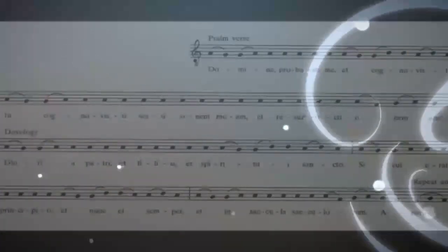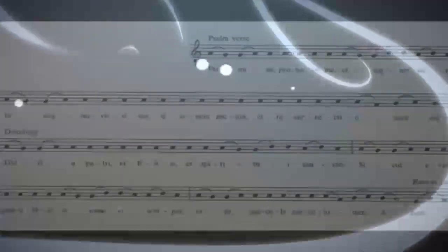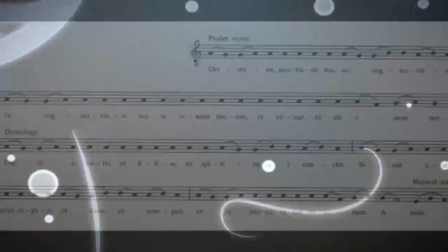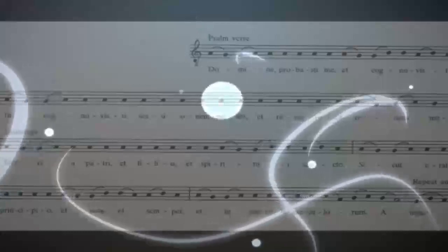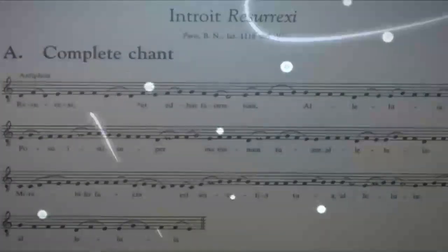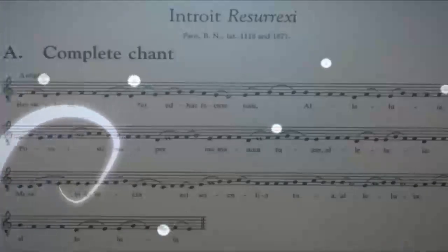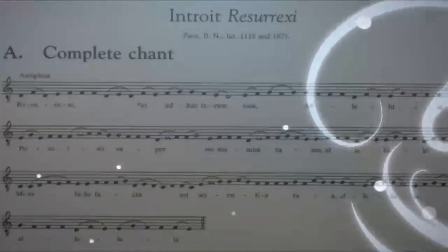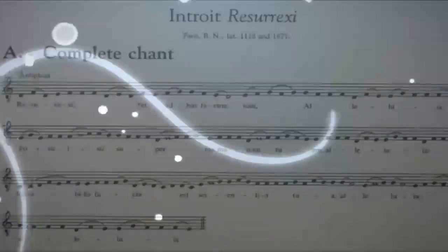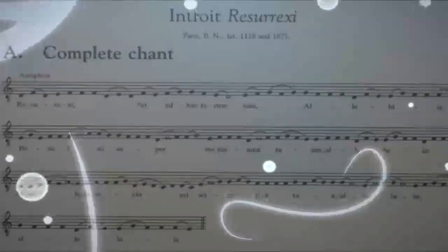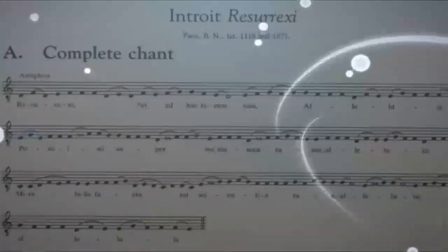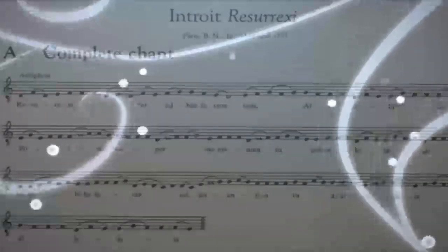After we get through with the modes, we're going to start talking about counterpoint. Counterpoint is something that traditional composers like Bach, Mozart, Haydn, and Beethoven considered to be one of the most fundamental concepts to writing music — sometimes even more than harmony. It was one of the key things you had to master to be a great composer. We're going to spend a lot of time talking about the rules of counterpoint, how it works, how you can use it to make your music better, and how to spot it in other music.